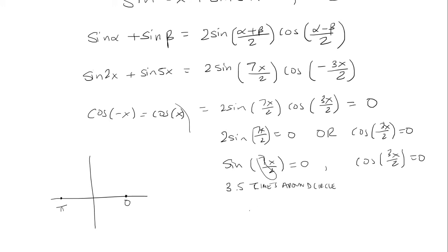So first time at 0 is 0. We're going to set this equal to 7x over 2. So first angle is 0, then pi, then 2 pi. This is one time around the circle. We need to go 3 and a half times. Then it will be 3 pi, 4 pi. Now we're 2 times around the circle.